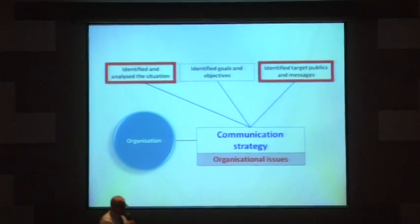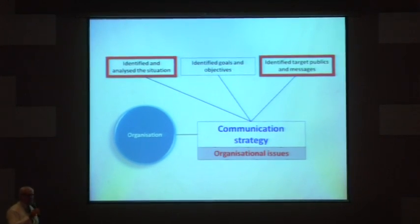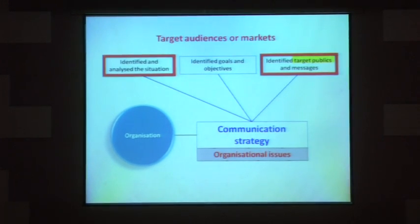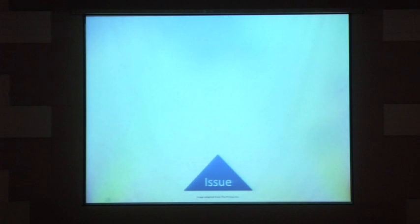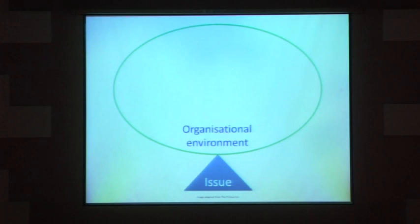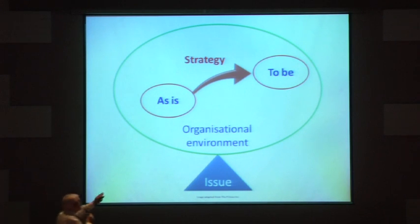We're concerned about organisational issues, and what a strategy is trying to do — whether it's a marketing communication strategy or a strategic communication strategy — is to take an issue, such as lack of sales of a new product because people don't know about it, or addressing a decline in sales, or an issue about the natural environment that might impact the organisation. We take that issue, think about the situation as it is right now, and develop a strategy which takes us to the point we want to be at. That's the change we want to make — we want people to buy our product or understand our point of view on a strategic issue.